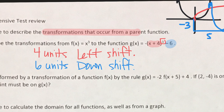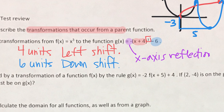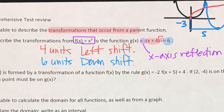The negative out front is a reflection. Because it's in front of the parentheses, it's an x-axis reflection — it makes the y-values negative, so the y-values on top become the y-values on bottom. Those are the three transformations from the parent function x cubed: shift left 4, shift down 6, and x-axis reflection. Be able to list all transformations — left/right, up/down, and x-axis or y-axis reflection.